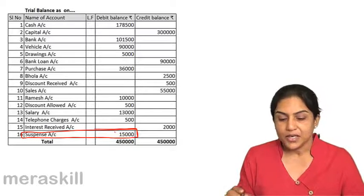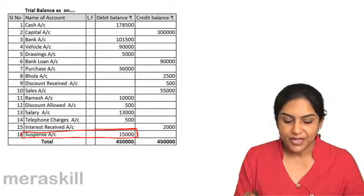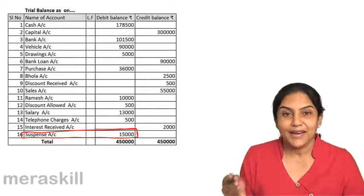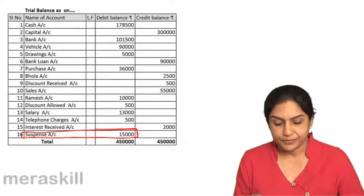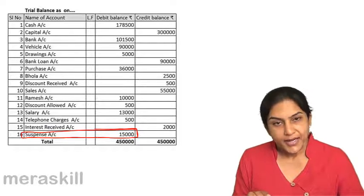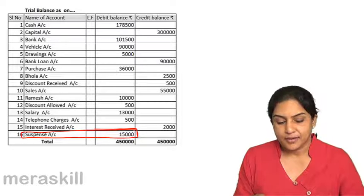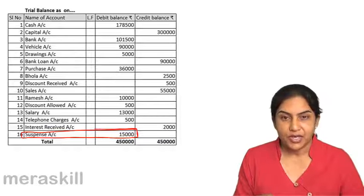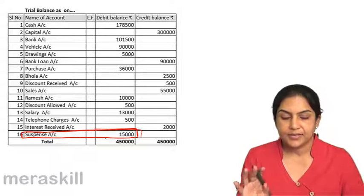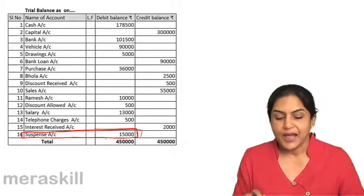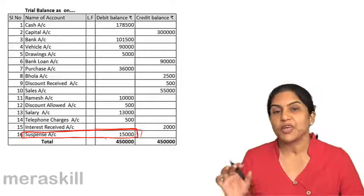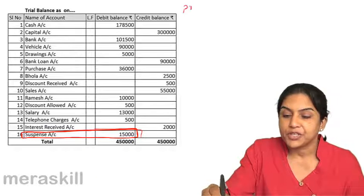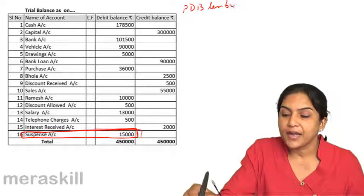It could be a debit balance or it could be a credit balance. If your debit side is short, you would have a suspense account with a debit balance. If the credit side of the trial balance is short, then you would have a suspense account with a credit balance. In an example like this, the suspense account was created with a debit of 15,000. Later on, we find out that this error was due to — you remember — the purchase day book being undercast by 15,000, meaning the purchase day book was less by 15,000.